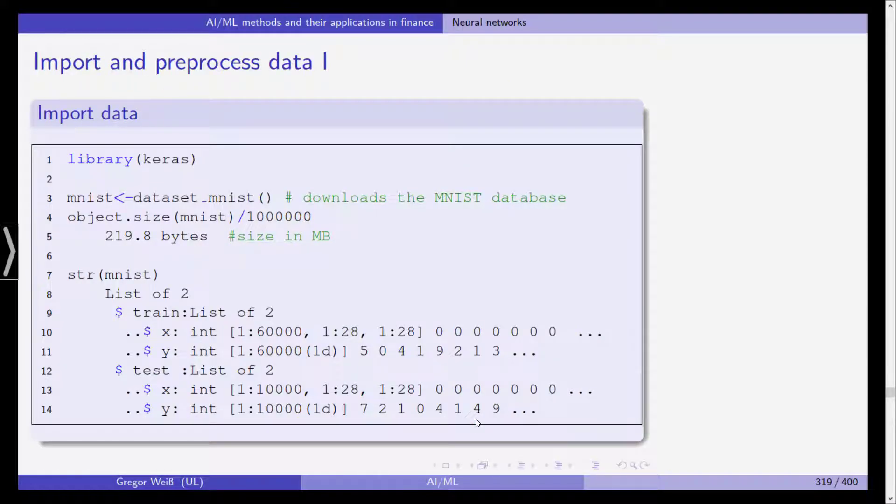We start by importing the data. We load the library KERAS and then mnist is dataset mnist. This downloads the database. The object size is 219 megabytes. This is not really large, but it might be too much for a regular notebook. Even this rather small dataset is even too large for a regular notebook. This is why we are not using larger data samples here in this lecture.